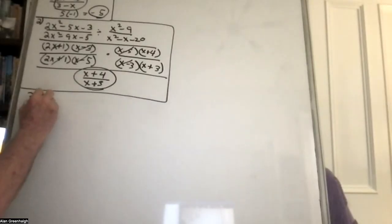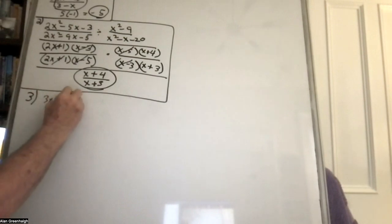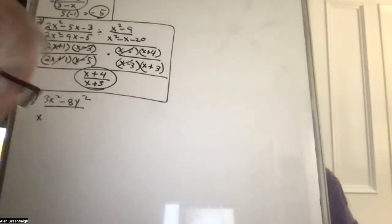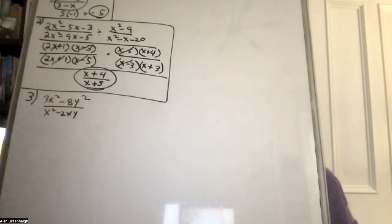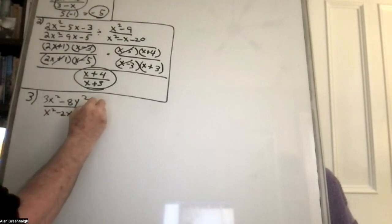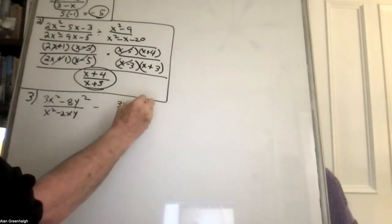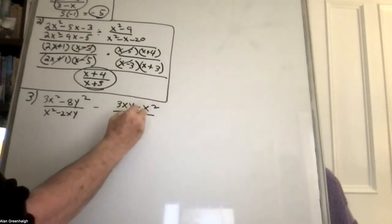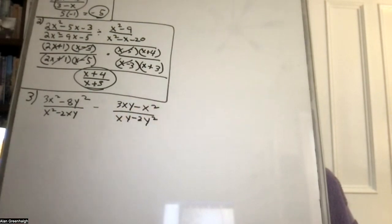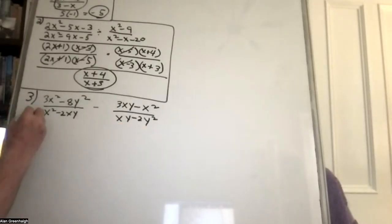Problem 3: 3x squared minus 8y squared divided by x squared minus 2xy, then minus 3xy minus x squared, divided by xy minus 2y squared. This was a problem. The first step is to factor — factor here and factor here.